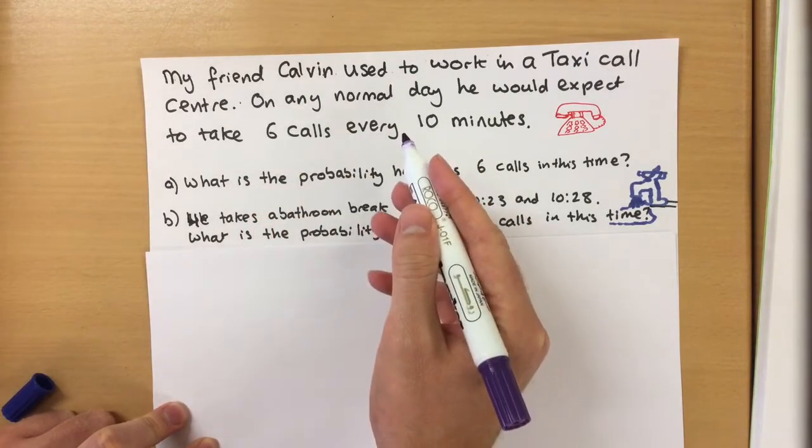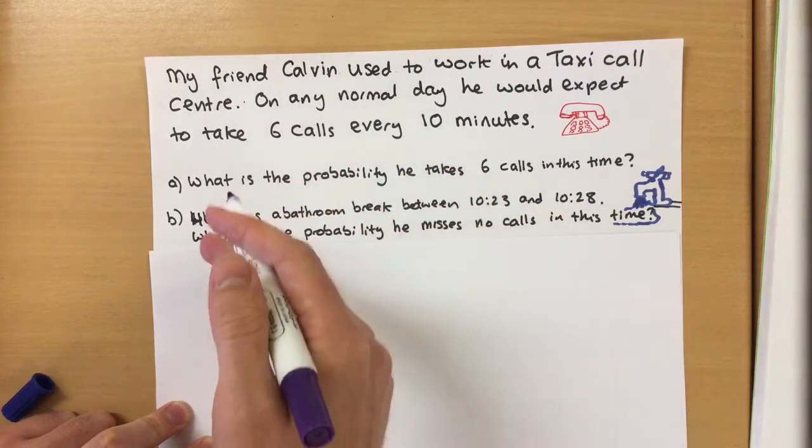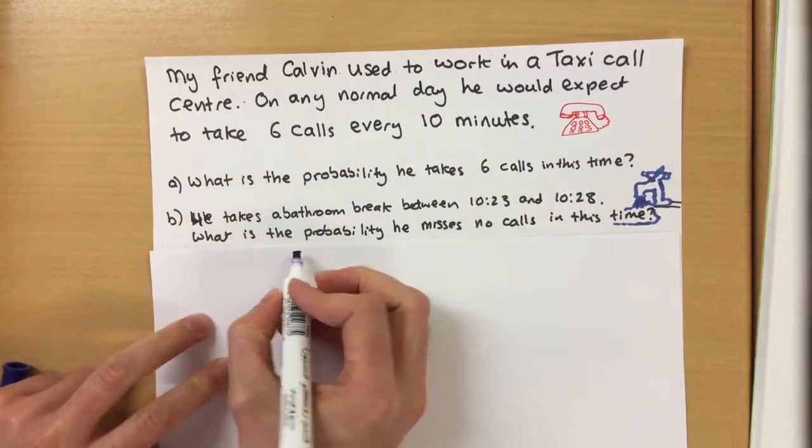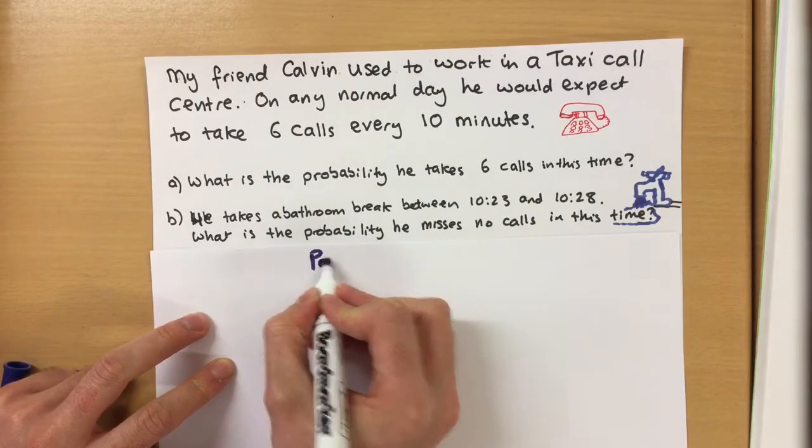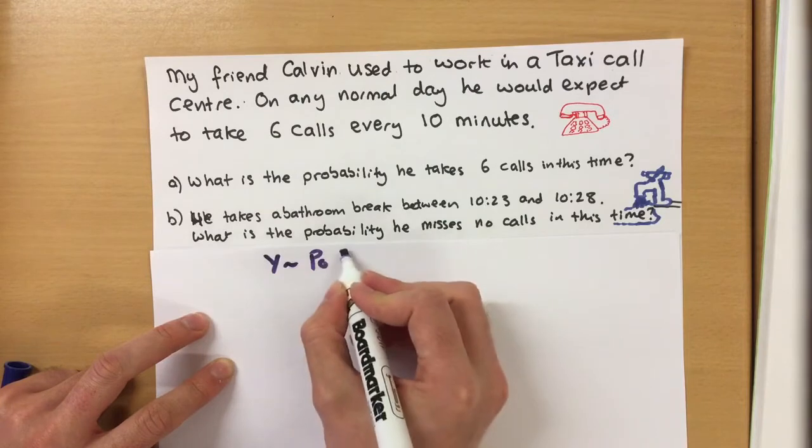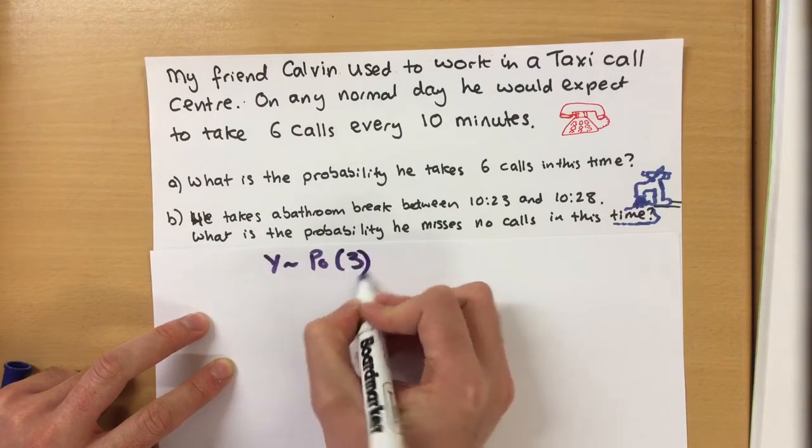And let's think about this. If you expect six calls every 10 minutes, then every five minutes you'd expect half number of calls. So now we're gonna have a new distribution, call it Y, and this is now an average of three calls.